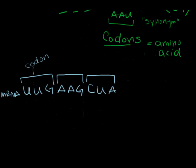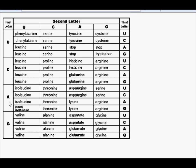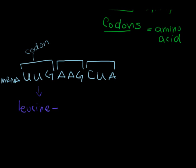So when the mRNA gets to the ribosome, these codons tell the ribosome what amino acid to add. UUG equals leucine. What about AAG? Going back to our chart: first letter A, second letter A, follow this down to the box. AAG — G is right here — so AAG is lysine.